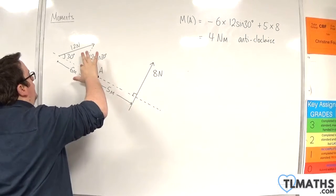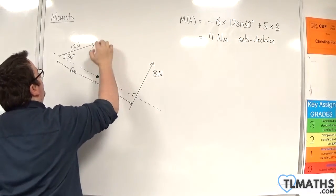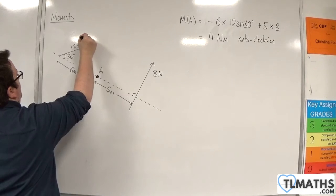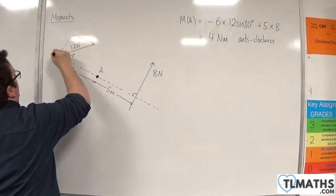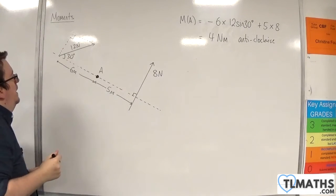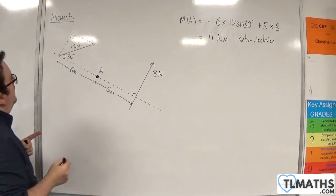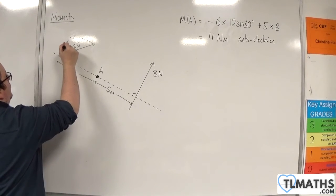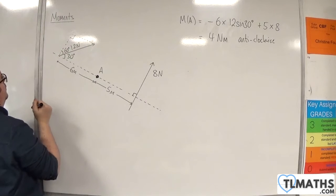Now, alternatively, you could think of drawing a right-angled triangle this way. And some people might prefer this. Now, this angle here would then be 60 degrees, to make that up to a right angle.